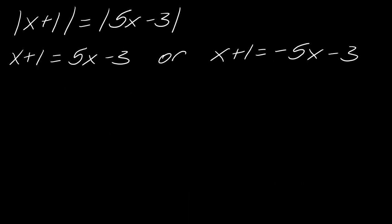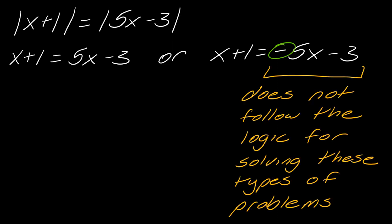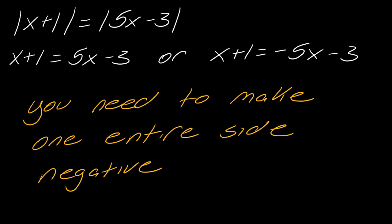What if you just put a negative in front of part of one side — say, only in front of the five X, ignoring the negative three? This looks like two different equations, but it violates the logic. You have to make the entire side negative, which requires parentheses. Putting a negative only in front of part of the expression does not make the entire side negative — you need all signs flipped. This would give you a unique answer, but it would be the wrong answer.